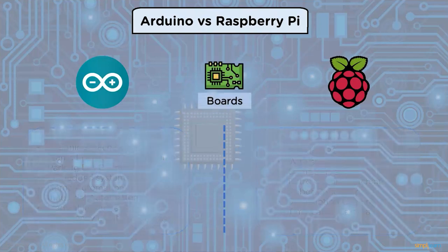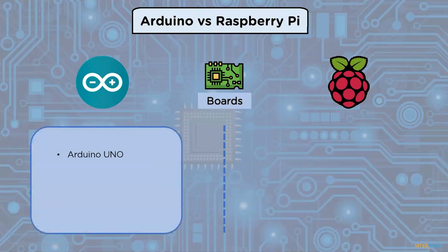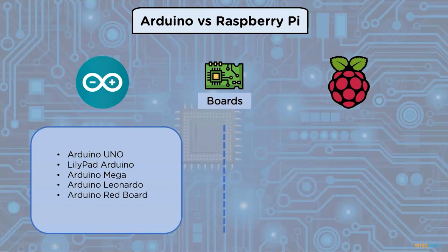Now let us look at the different types of Arduino boards. These include Arduino Uno, LilyPad Arduino, Arduino Mega, Arduino Leonardo, Arduino Redboard, and Arduino Shields.